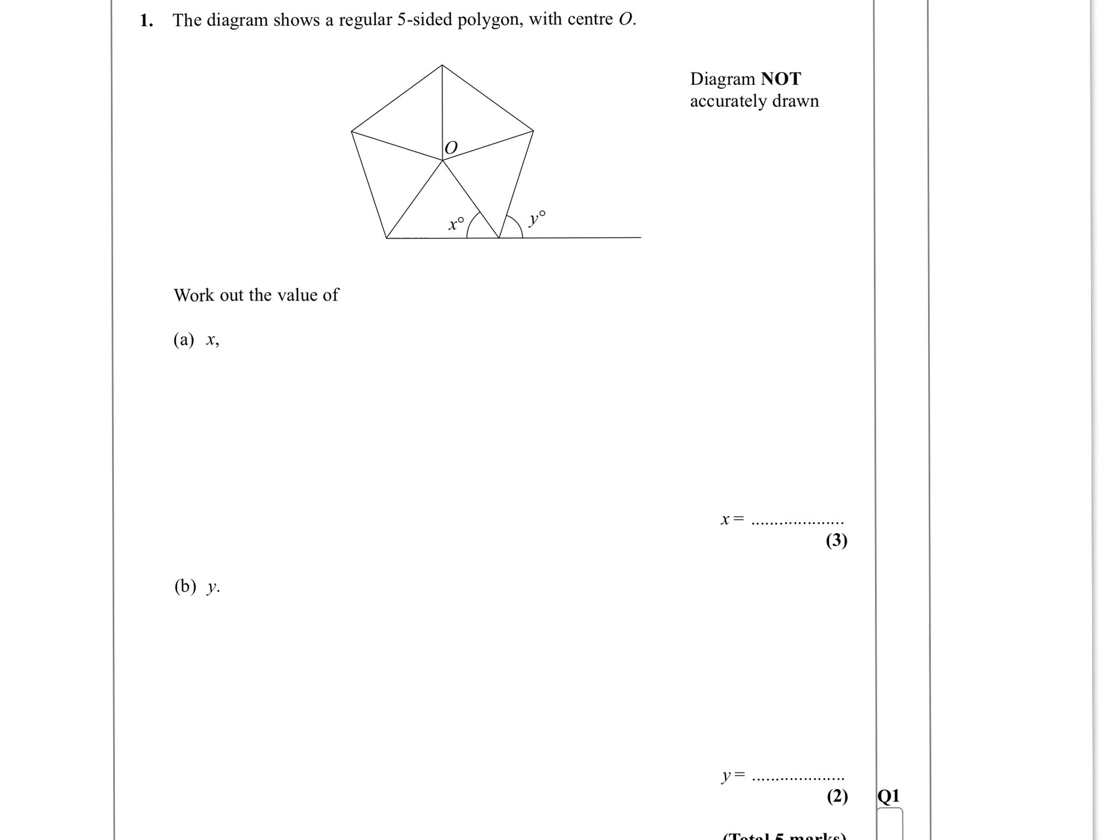Okay, so we're on question number one of the November 2007 IGCSE 3H paper. Work out the value of X in a five-sided regular polygon.